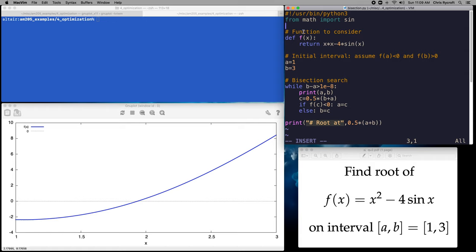If we look at our program we first define our function that we're going to consider to be f of x and we then define an initial interval from a to b and we assume that f of a is less than zero and f of b is greater than zero. And here we're just saying a equal 1 and b equal 3 to match the range that we're considering. And we then perform the bisection search. We calculate the midpoint c between a and b and we evaluate f there. So on our first iteration c will be equal to 2.